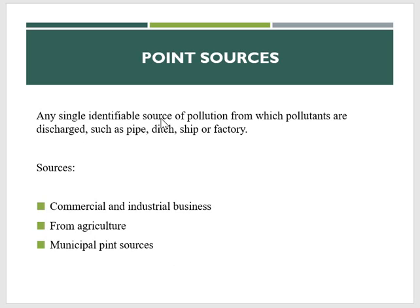Point source is any single identifiable source of pollution from which pollutants are discharged, such as a pipe, ditch, ship, or factory. This means that waste from a factory or industry is dumped into a particular water source from a single point. Common examples include factories and sewage treatment plants.